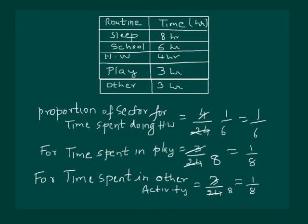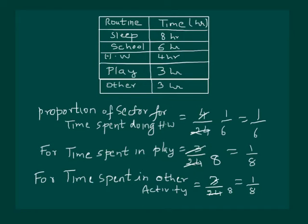Similarly, we will calculate the proportion of sector for time spent doing homework, which is 4 hours out of 24, and it comes out to be 1/6 of the circle. Then the proportion of sector for time spent playing is 3 out of 24, which comes out to be 1/8 of the circle. And the proportion for time spent in other activities is also 3 out of 24, which is 1/8 of the circle.